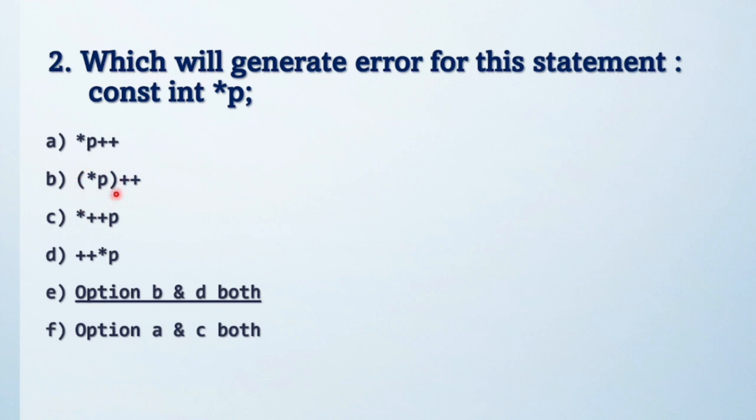But here star p increment, bracket has higher priority, so this will generate error because of this const. Again pointer plus plus p, here only address increment. Then again plus plus pointer p will increment value, so it will also generate error. That's why option b and d generate error.